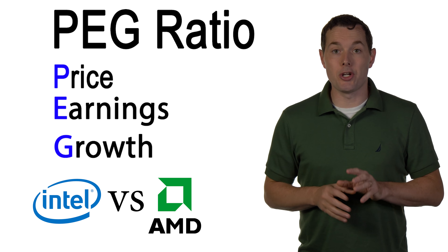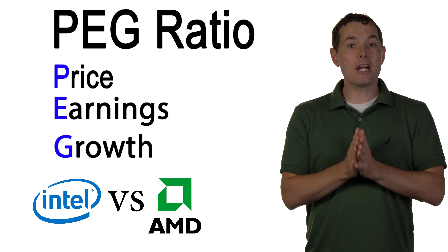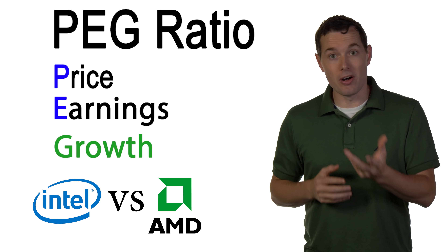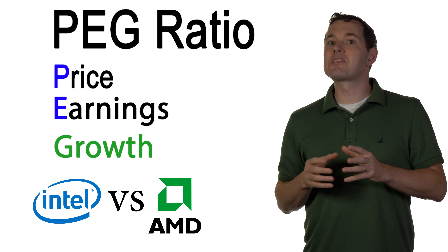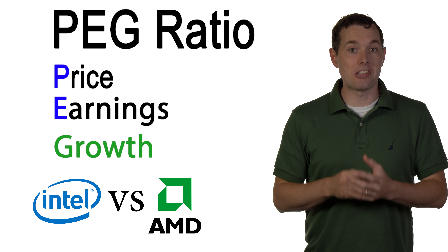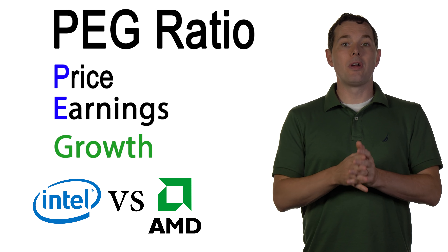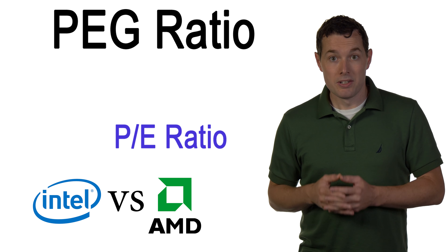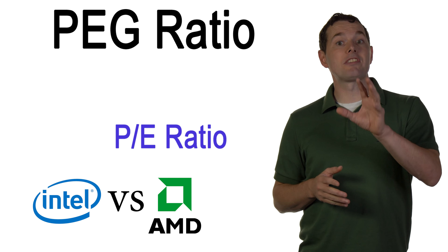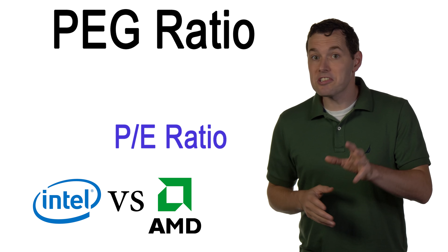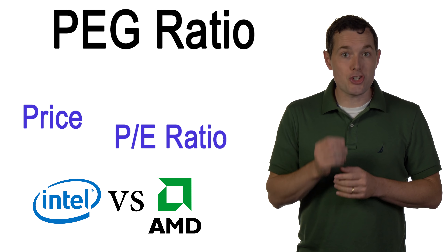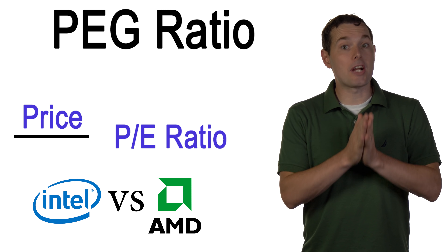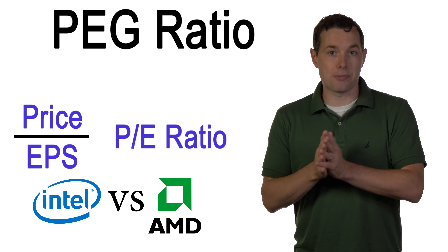So what is the PEG ratio? Well, the PEG ratio is a way to account for the growth of a company's earnings when it comes to valuing a stock. So many of us have heard of the very popular price to earnings ratio. To illustrate what the price to earnings ratio is, we're simply going to take the price per share of the stock and then we're going to divide that by the company's earnings per share.